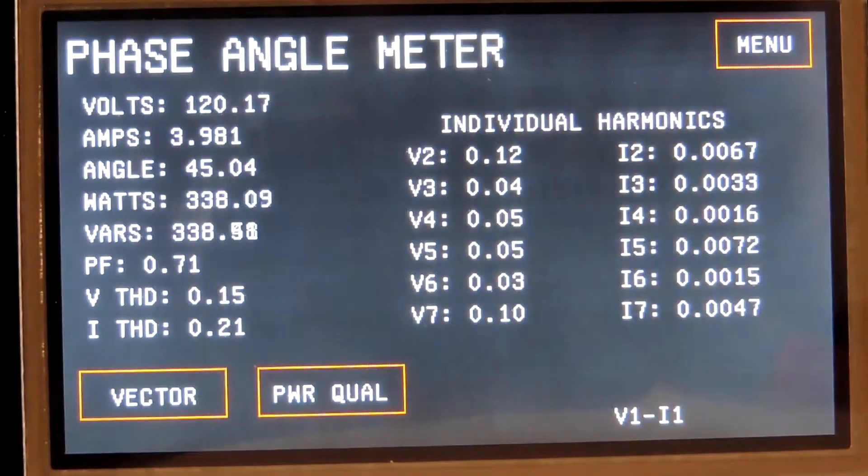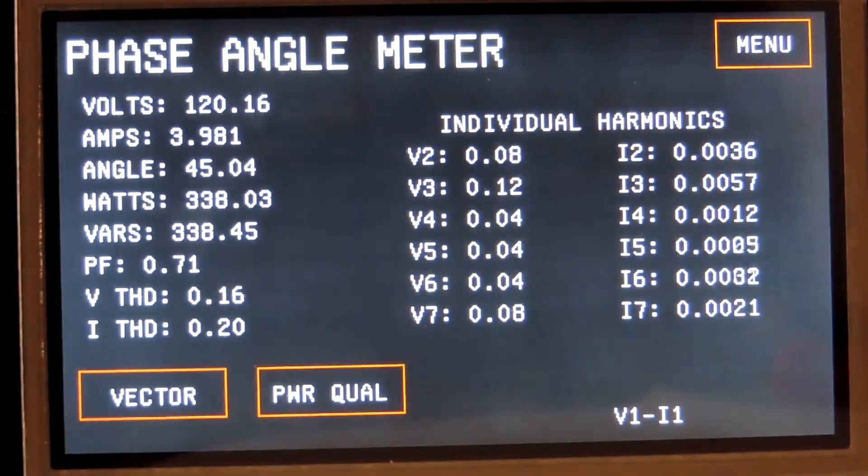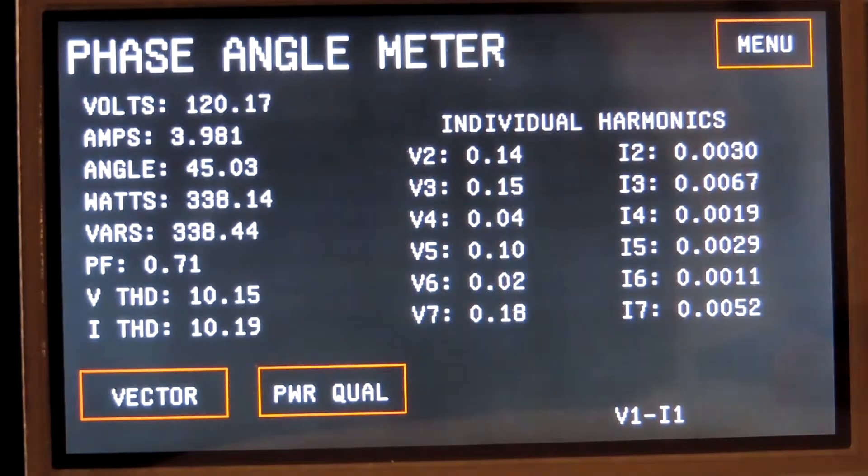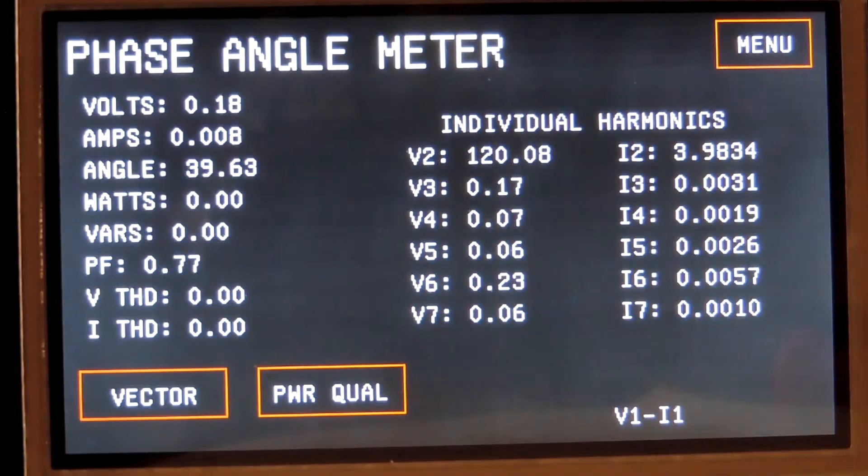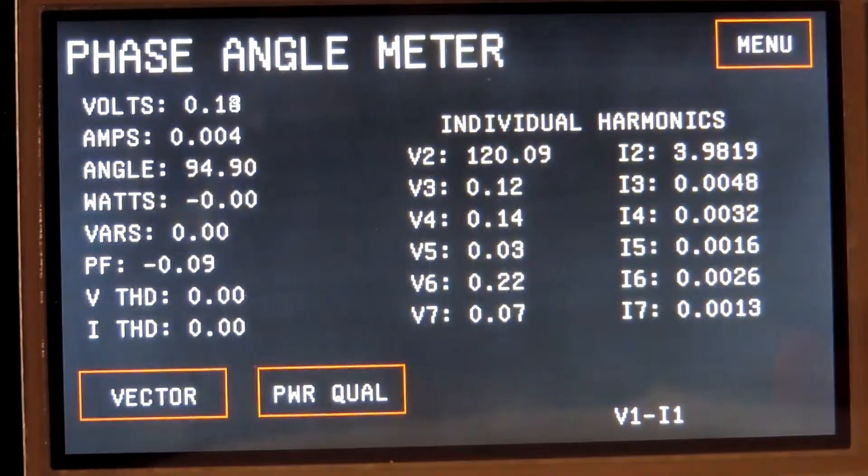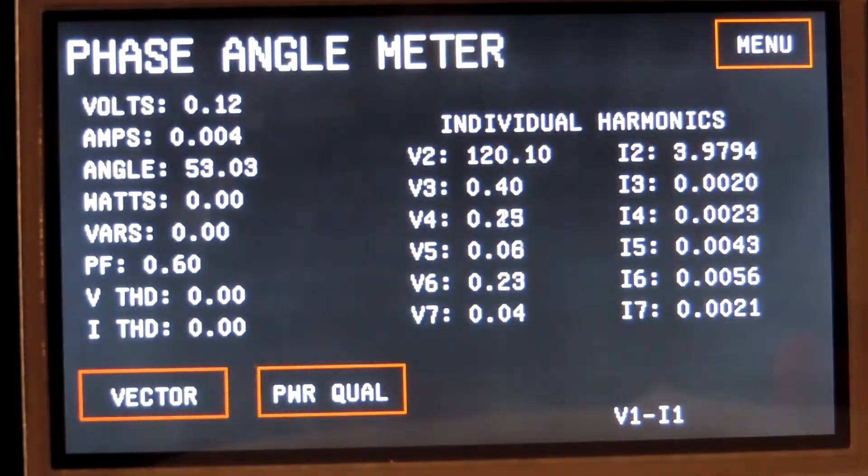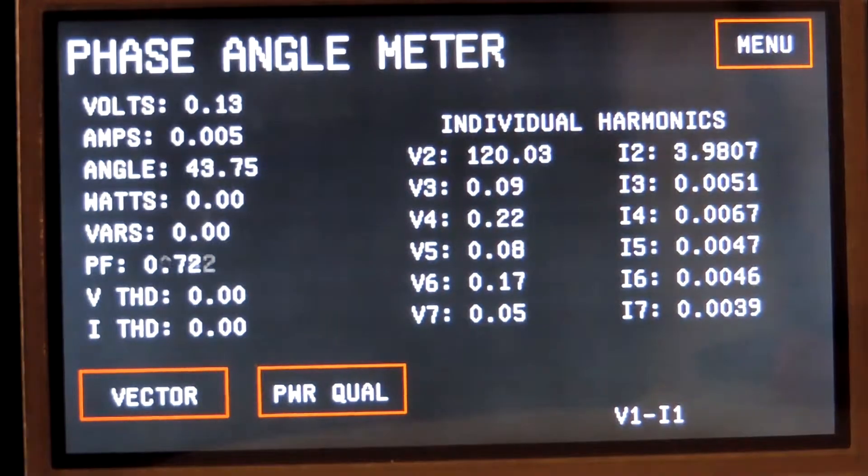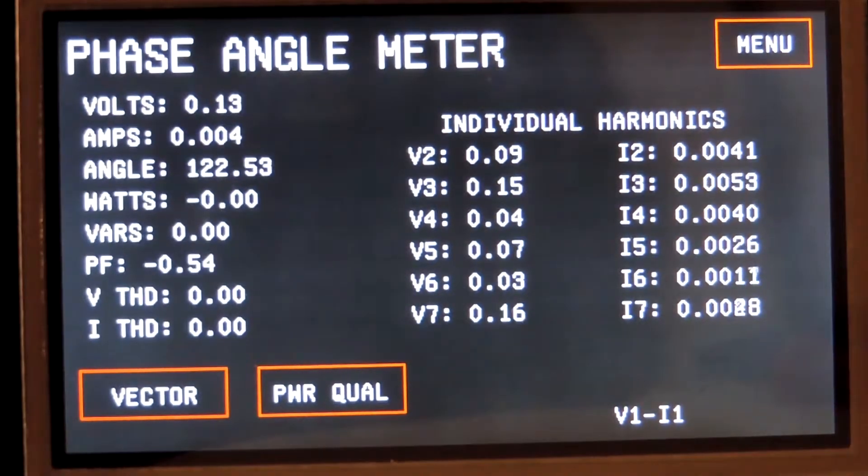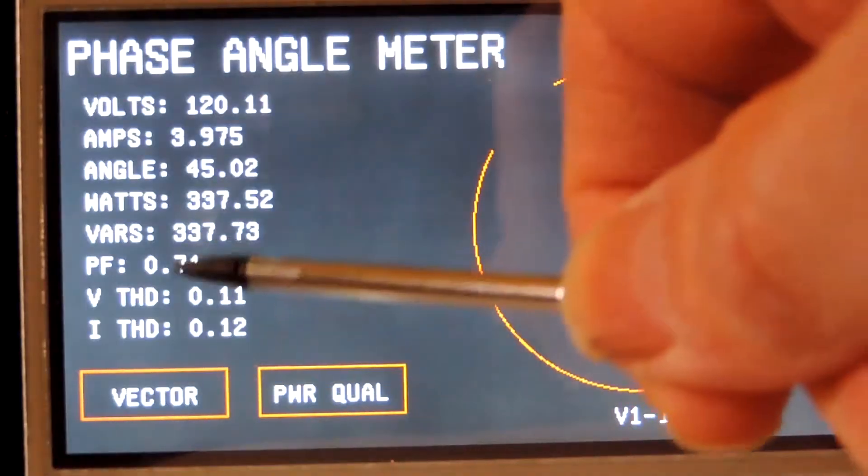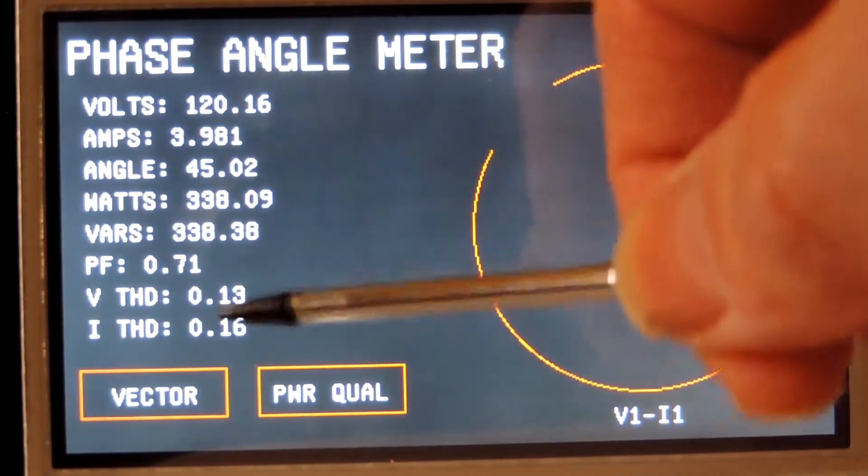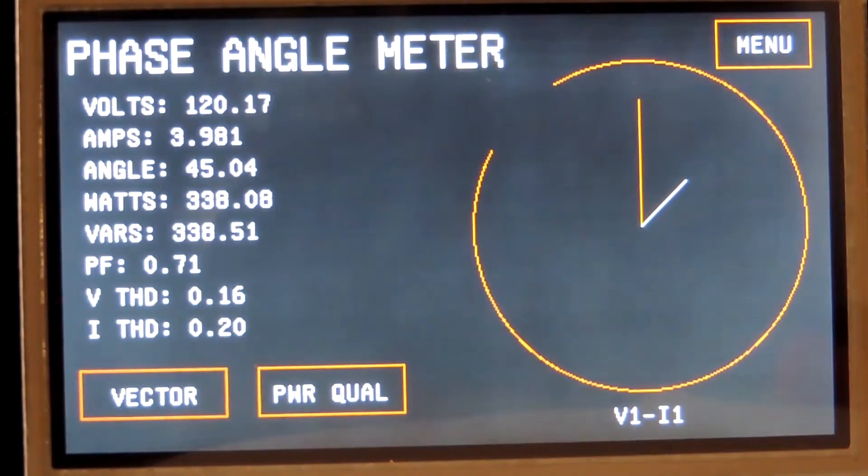The power quality button, press that, gives you the individual harmonic levels. You notice when I change the Epic to 120 hertz, the V2 harmonic now reads the voltage and current, instead of the fundamental. That gives you the amplitude of the harmonic. Over here in the vector, the THD is the percent harmonic distortion.